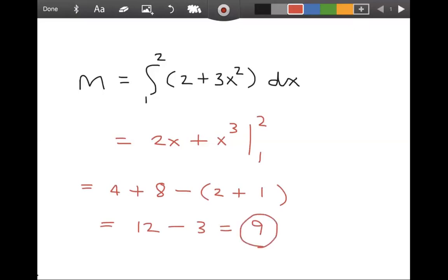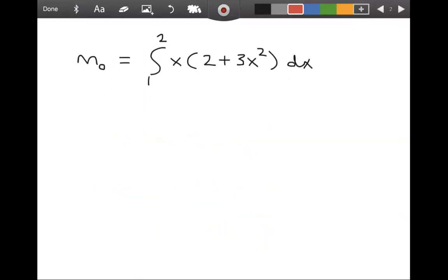To find the center of mass, first we calculate the moment about the origin. It's almost the same integral except with an x factor thrown in. So this is going to be the integral from one to two of two x plus three x cubed. The integral of two x is x squared. The integral of three x cubed is three x to the fourth over four. Plugging in two, plugging in one, we get four plus, let's see, two to the fourth is 16. 16 divided by four is four. Four times three is 12.